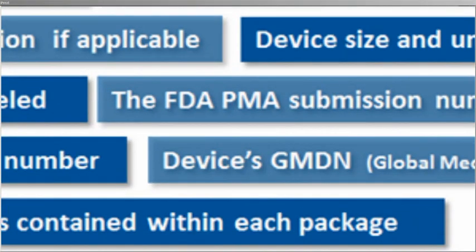There are two additional acronyms I'd like to define here as well. The first is pre-market approval, or PMA. This is the number that the FDA will assign to a Class III medical device after they've approved it for sale. And the GMDN, which is the Global Medical Device Nomenclature Code — a global code that's used to define specific types of medical devices.